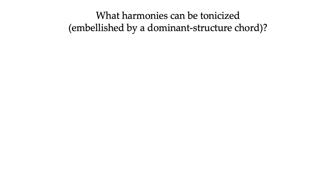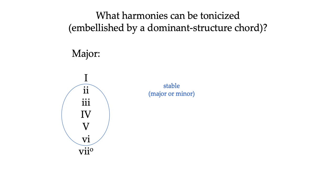Leading tones still go up; sevenths mostly still go down. So what harmonies can be tonicized or embellished by a dominant structure chord? Essentially any chord that is stable. In the major collection, most Roman numerals are either major or minor — only one outlier is our diminished seven chord. All stable harmonies are either major or minor chords, which makes sense if we're thinking about these as key areas. Take C major: a two chord is D minor. D minor is a key; it has a dominant chord. Therefore we can use a chord in D minor to emphasize the two chord.